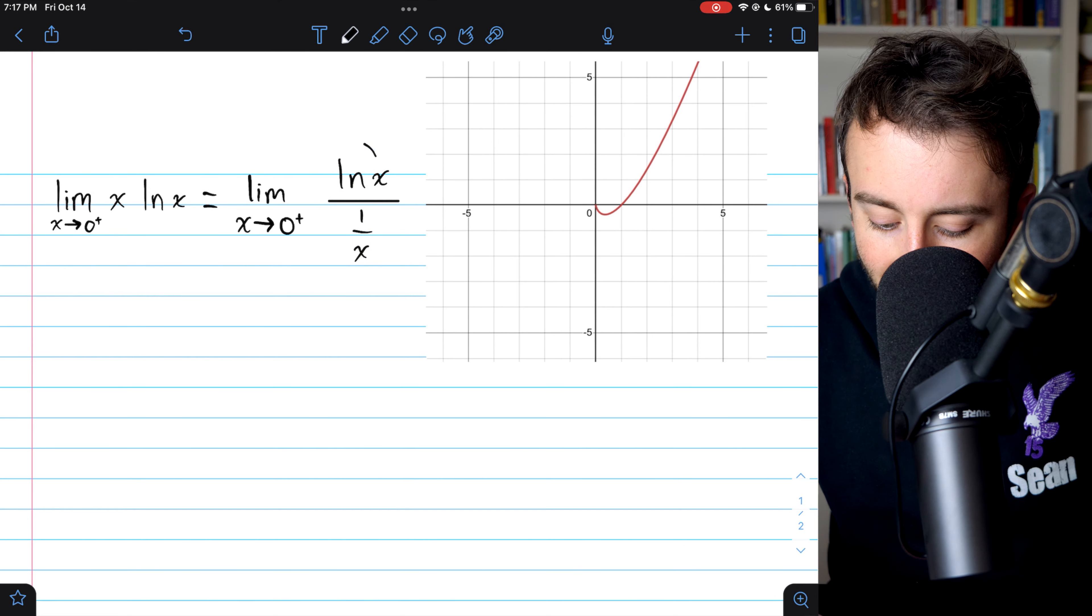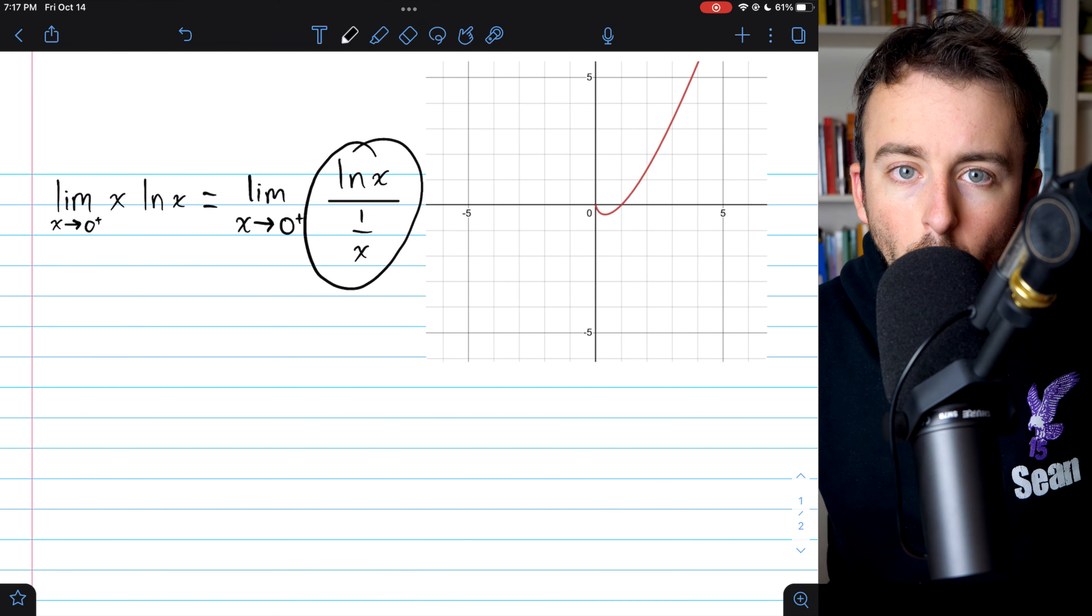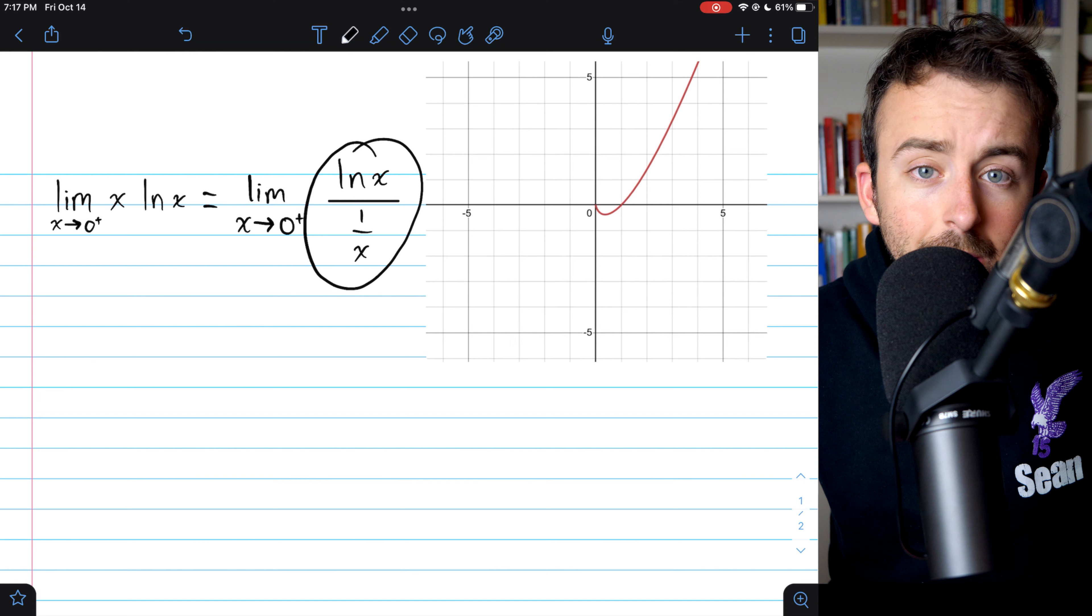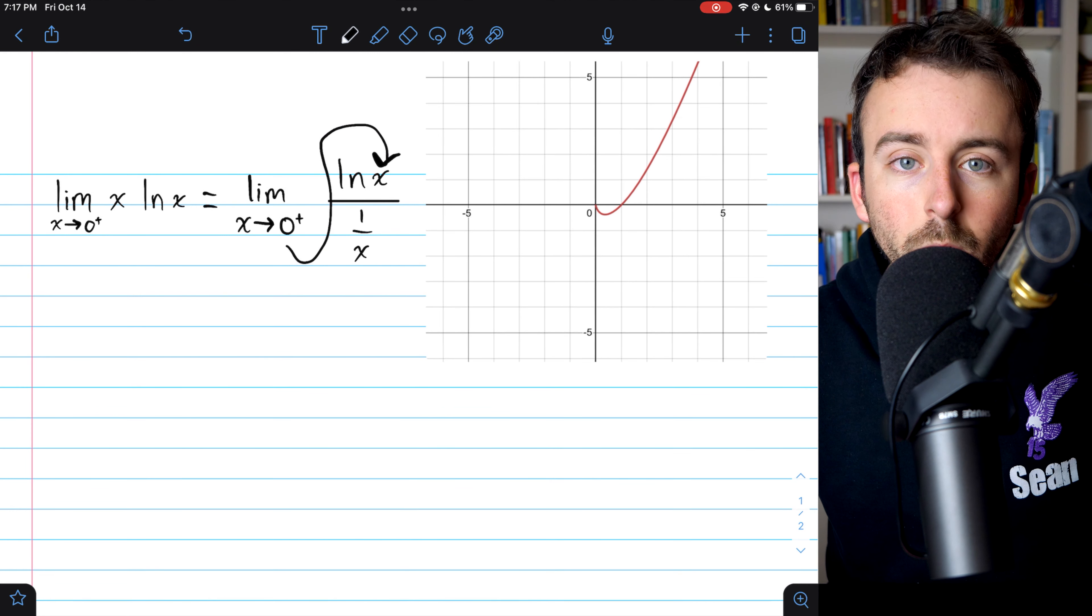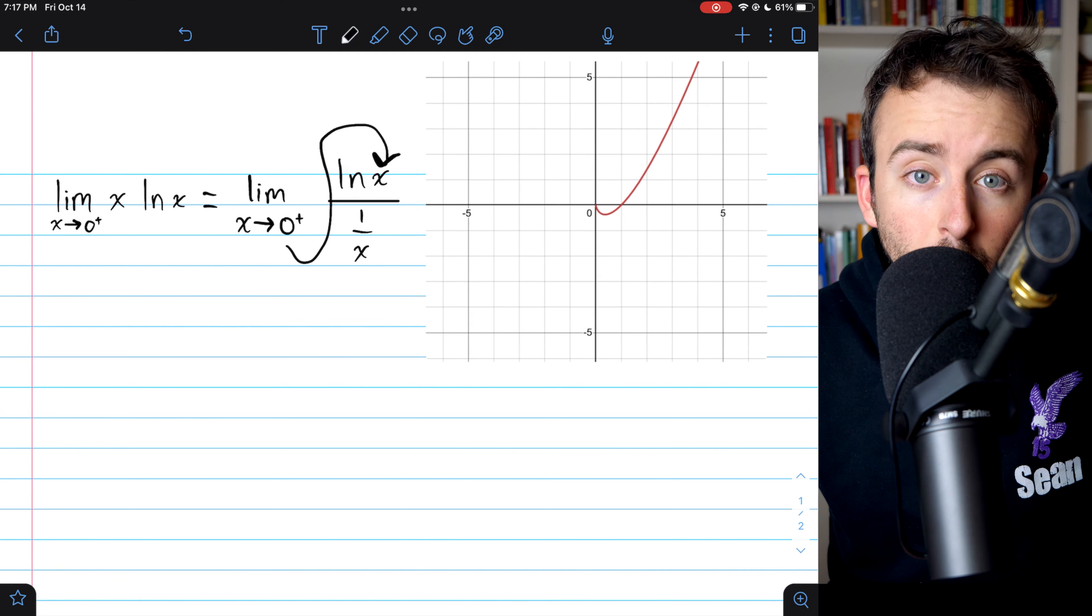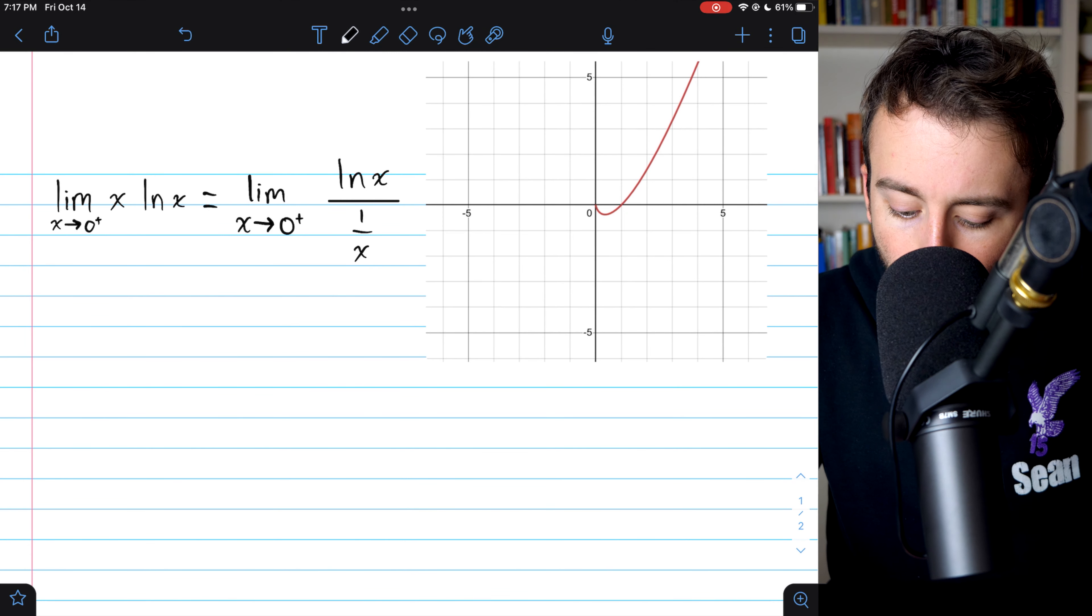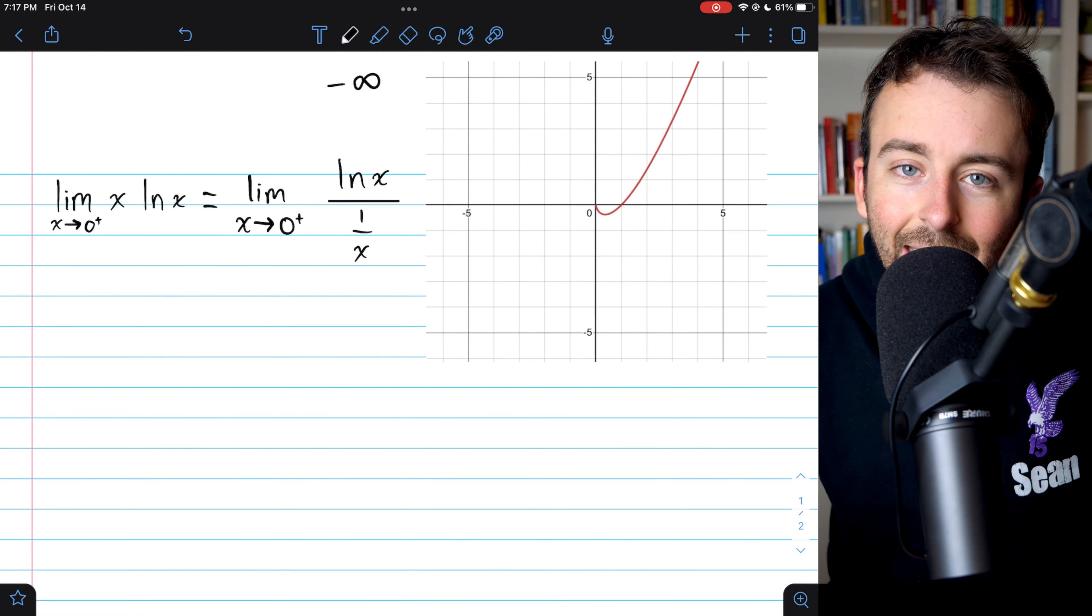Let's make sure that this is an indeterminate form by plugging in zero and seeing what we get. If we plug zero into the natural log, we're approaching zero from the right, so the natural log will be going to negative infinity.